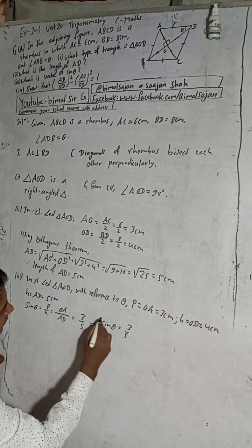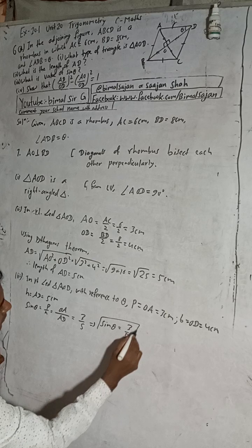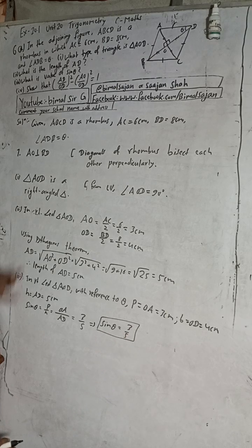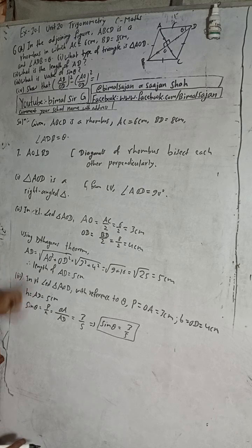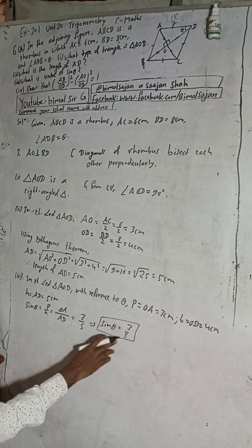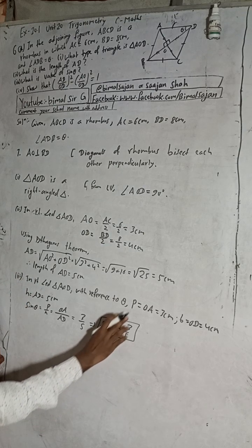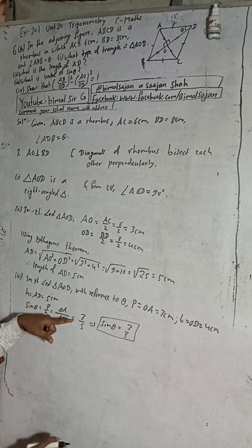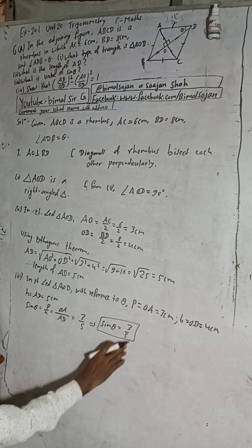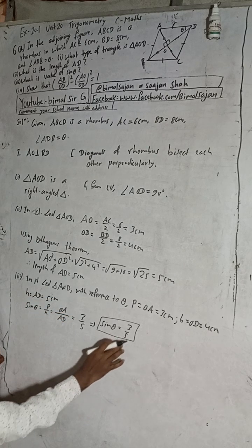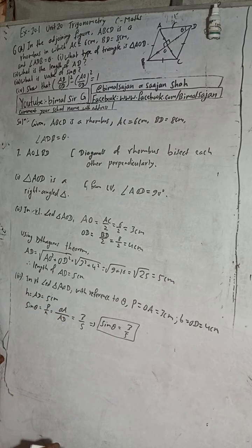In the last question 6b, I already solved that and got cos theta equal to 4/5. But in the book the answer written is 3/5, so the book answer for that was wrong.